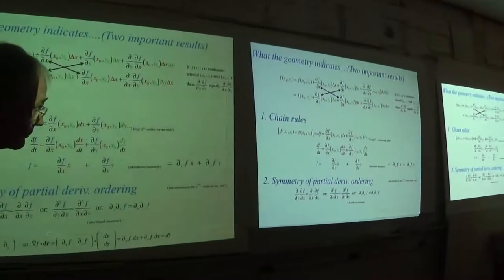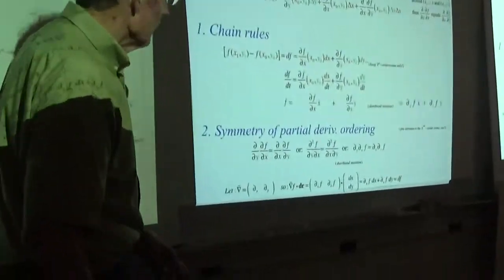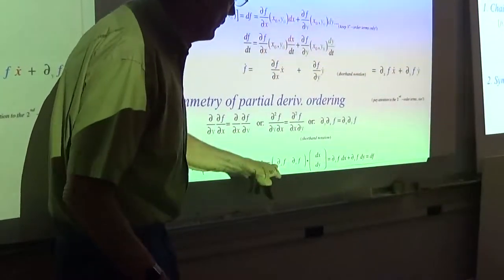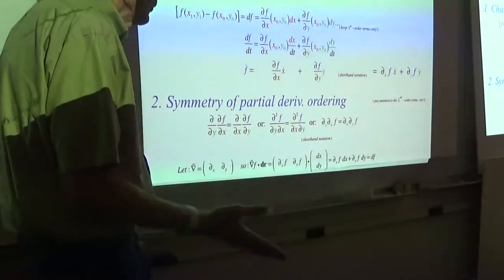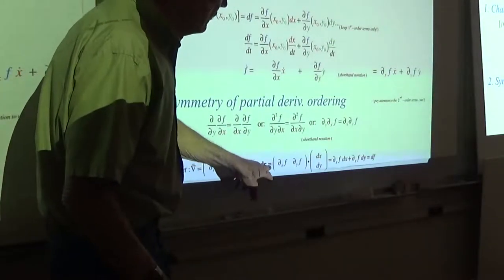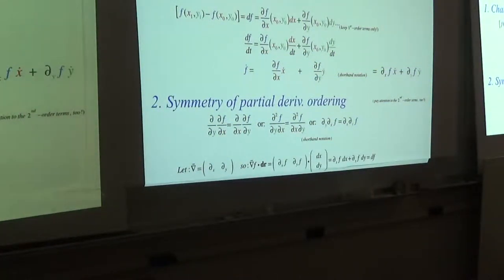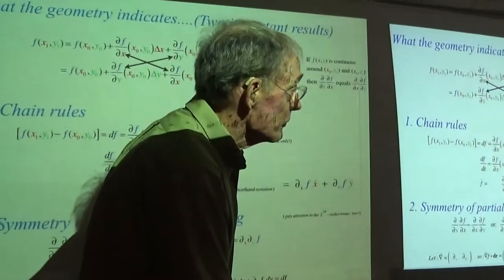A couple of other notations to get used to: the gradient del f is a vector consisting of one or more independent variable components, and we're getting used to the quadratic form algebra and geometry we'll be making heavy use of today. This is the end of the review of partial derivative material.